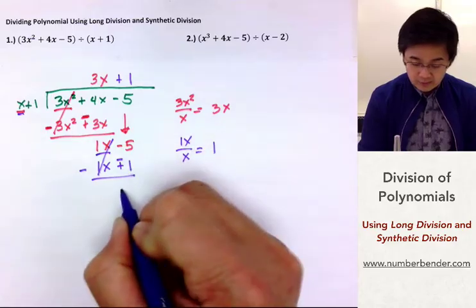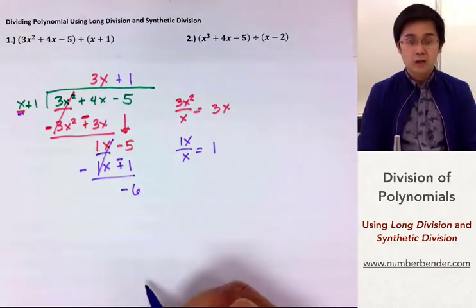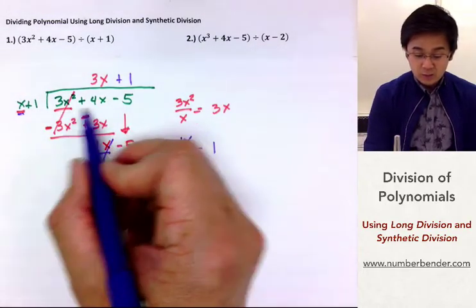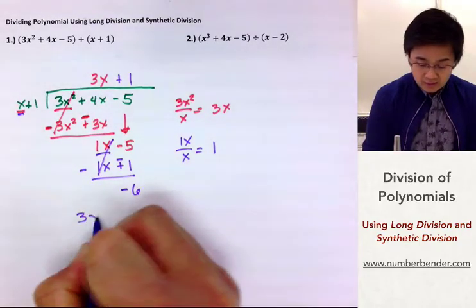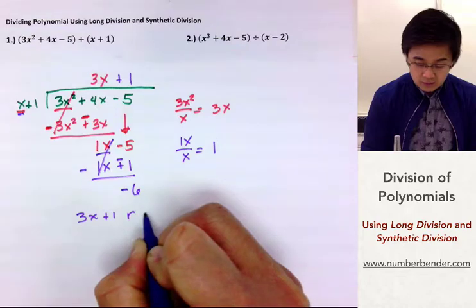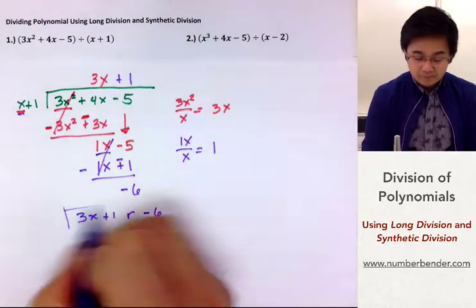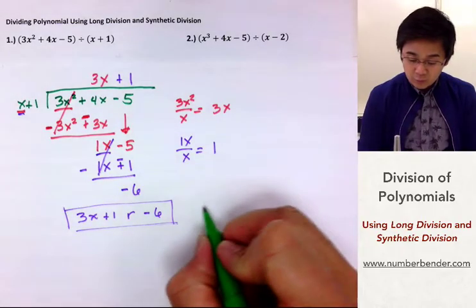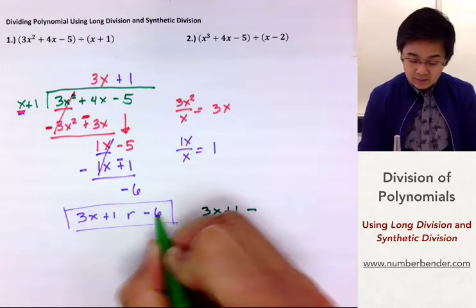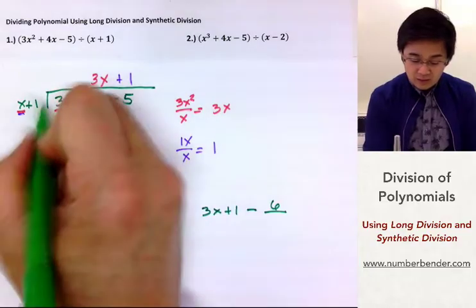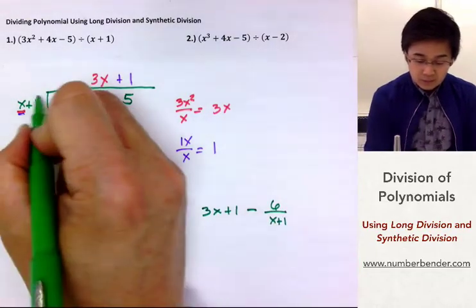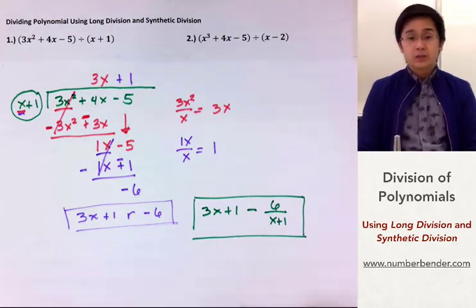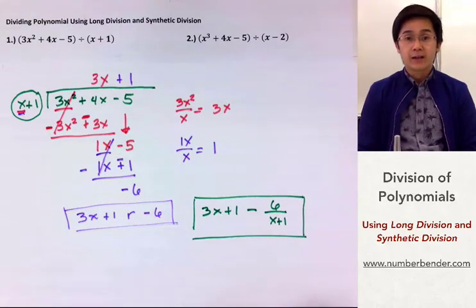So this is 0, and then you'll have negative 6. Since there's nothing else to bring down, we're finished with our answer. The quotient of 3x squared plus 4x minus 5 divided by x plus 1 will be 3x plus 1 with a remainder of negative 6. Another way of writing out our answer is in standard form as 3x plus 1 minus 6 all over the divisor, which is x plus 1. We use the divisor as the denominator for our remainder. This is how we use long division in dividing polynomials.